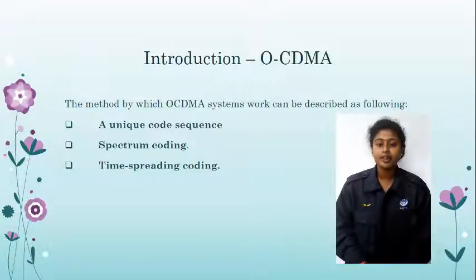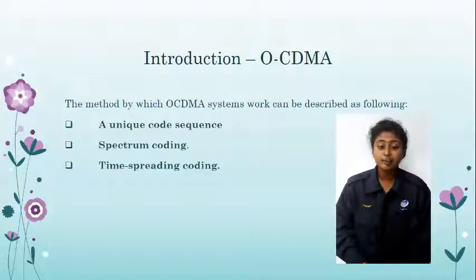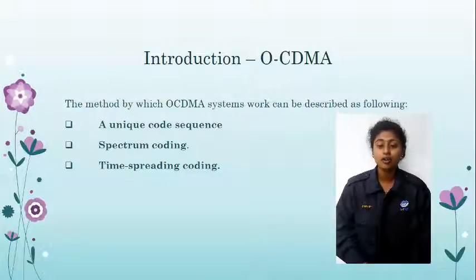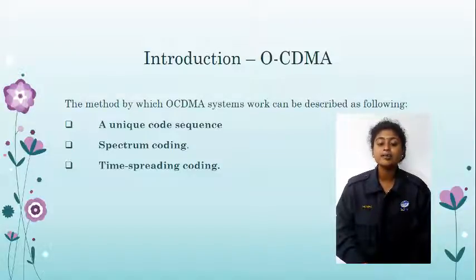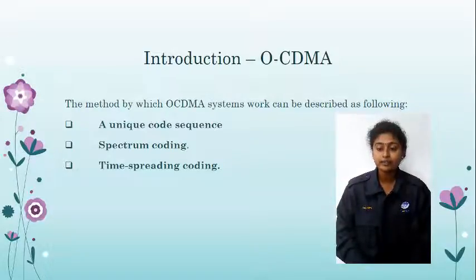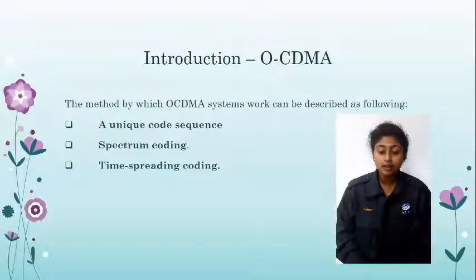The most important element for correct detection is for the codes to be ideally orthogonal and to have zero crosstalk with the code sequence of any other user. The second type is spectrum coding, which presents a sequence of different wavelengths obtained from a single broadband optical source divided into numerous narrow optical wavelengths.